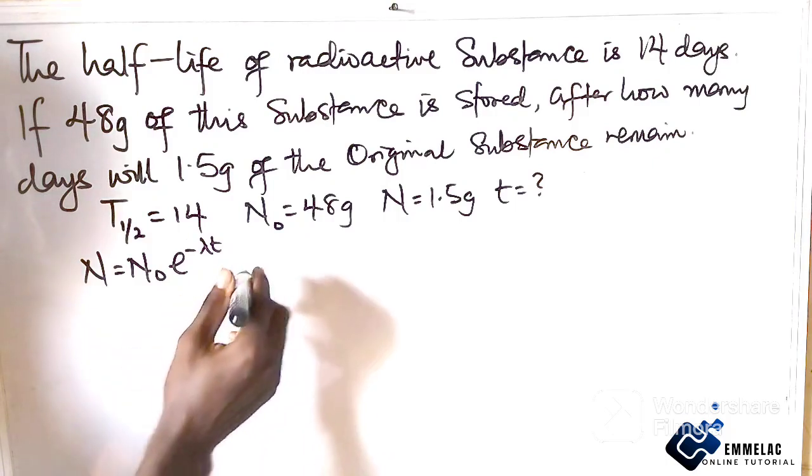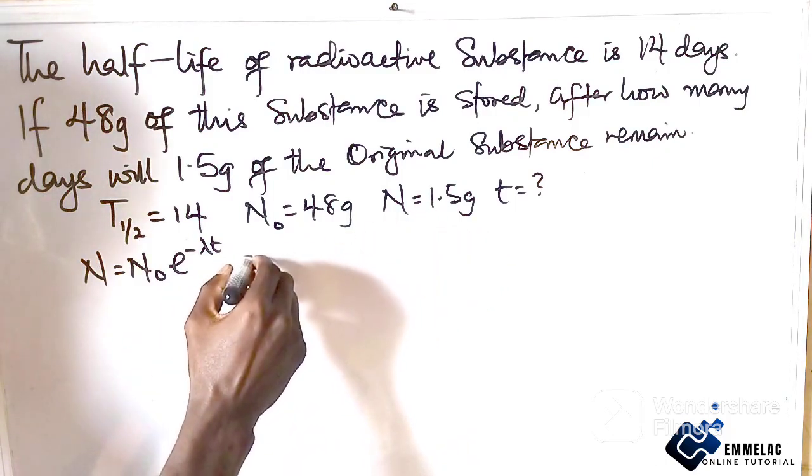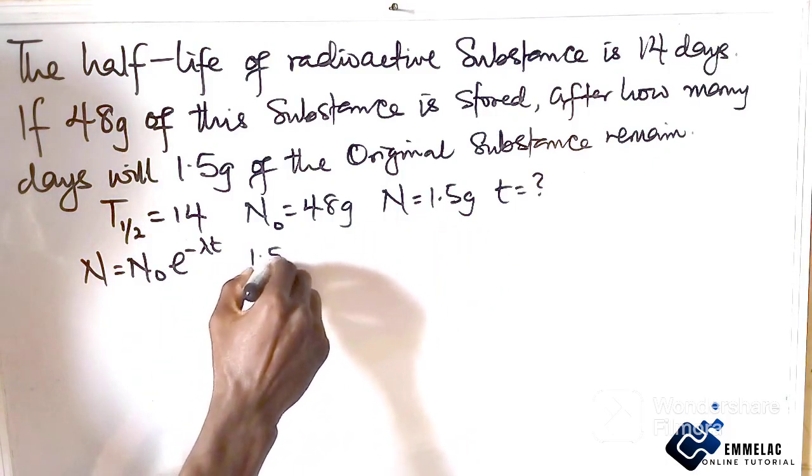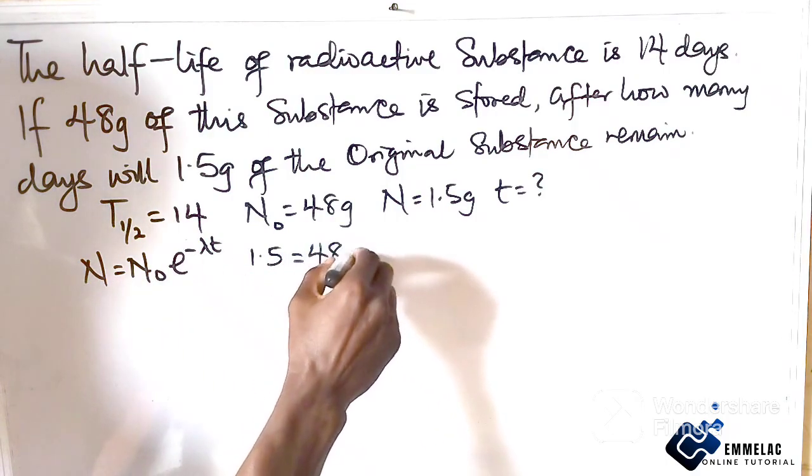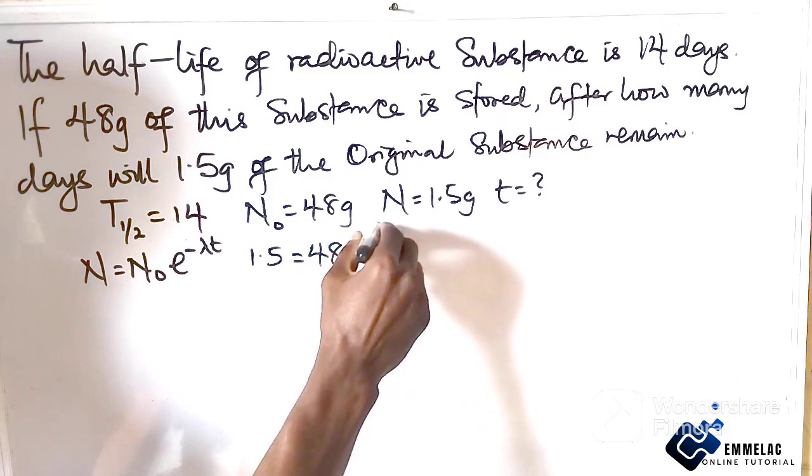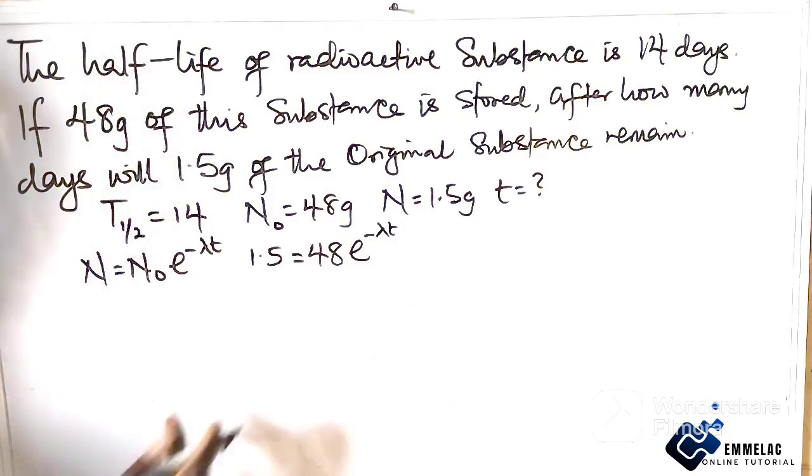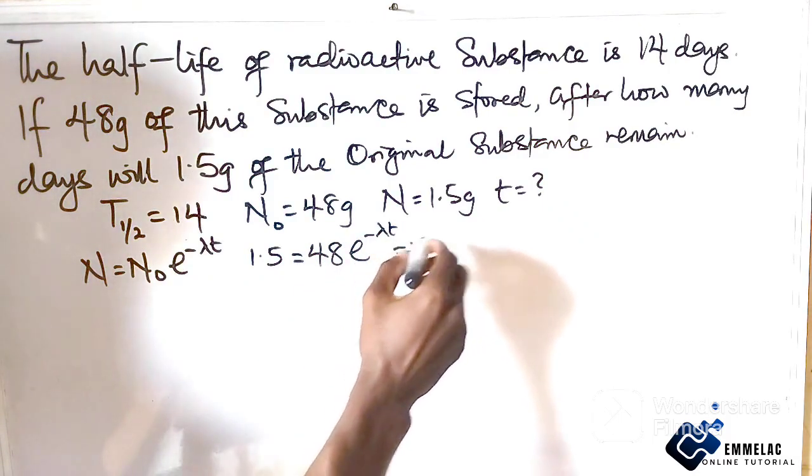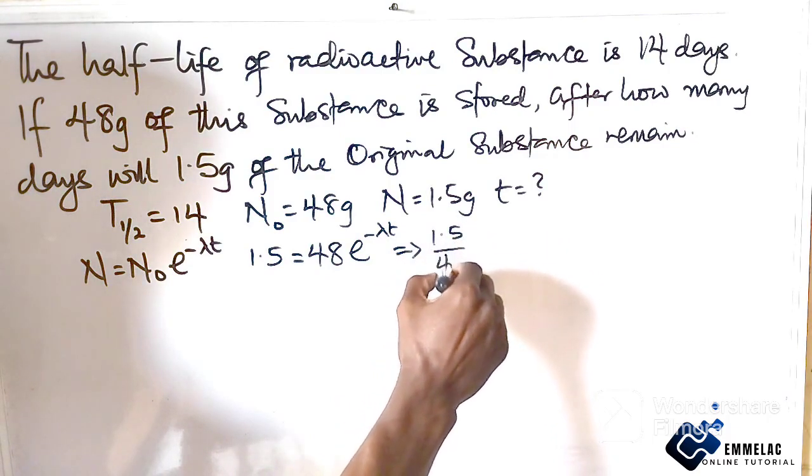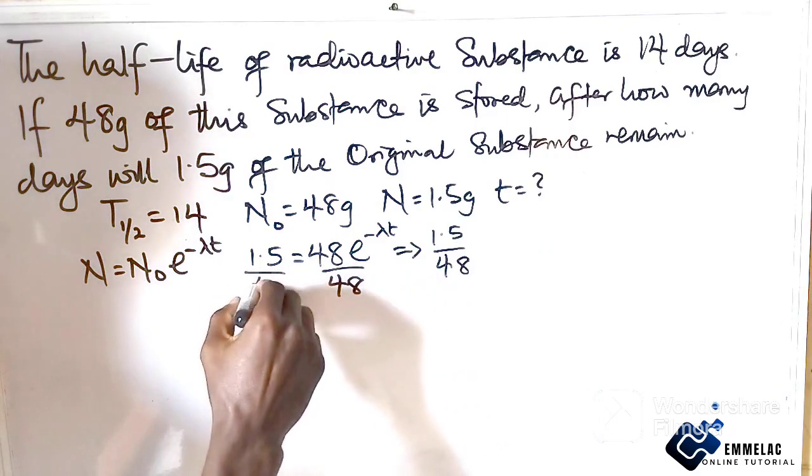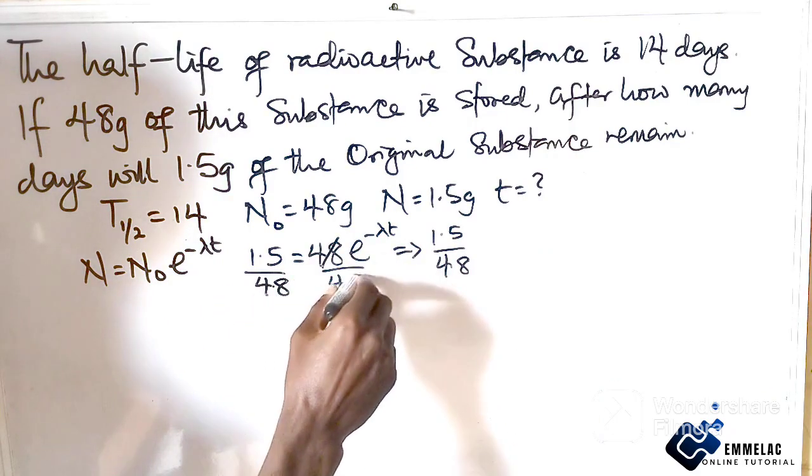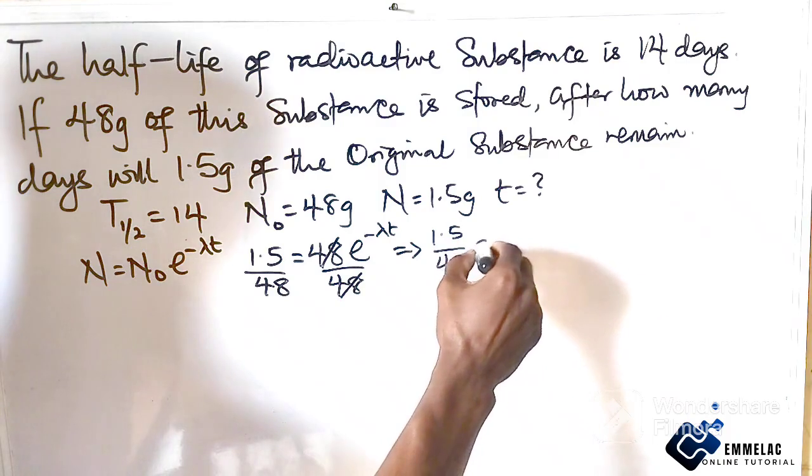So here we can say 1.5 equals 48e^(-λt). So in this case, we have 1.5 over 48, which means we are dividing by 48. This will cancel out, so we are left with e^(-λt) on the right side.